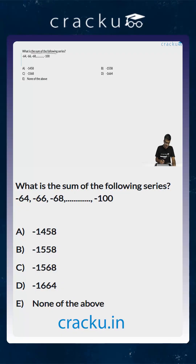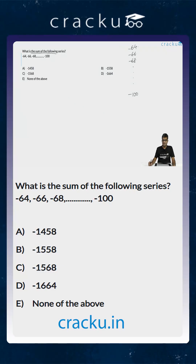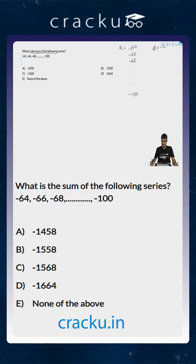In this question, we are asked to calculate the sum of the following series: minus 64, minus 66, minus 68, and so on till minus 100. This is an arithmetic progression. The first term A is equal to minus 64 and the common difference D is equal to minus 2. Every term is 2 less than the preceding term.